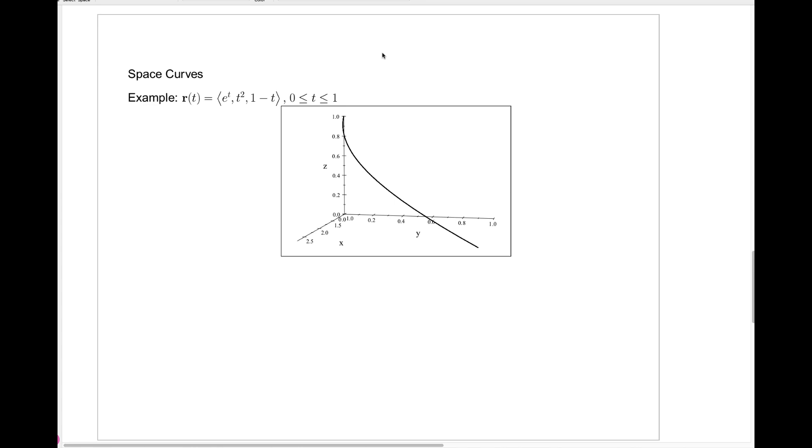Here's just another example I used my computer to draw a picture of. We have the vector function r of t equals e to the t, t squared, and 1 minus t. Again, I plotted it for t equals 0 to 1. You'll notice very easily that r of 0, the initial vector or initial point on the curve, r of 0 is the vector 1, 0, 1, which is way up here.